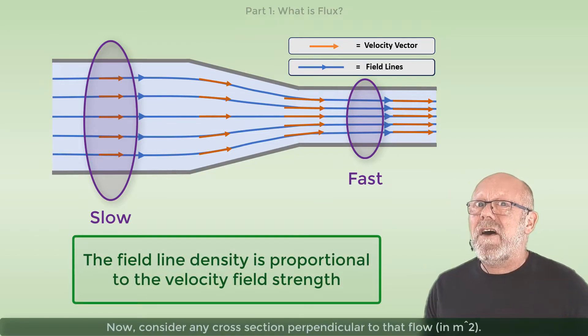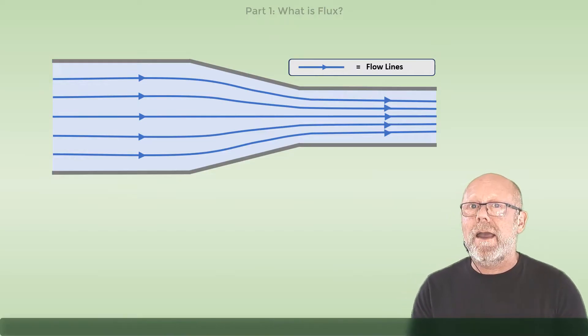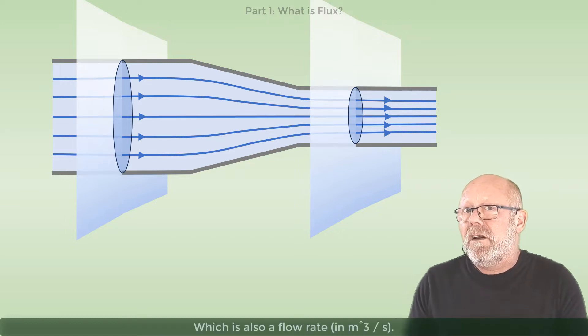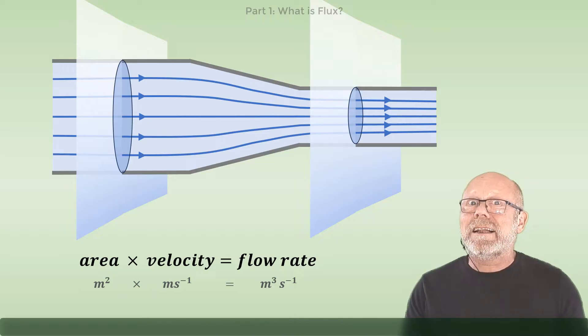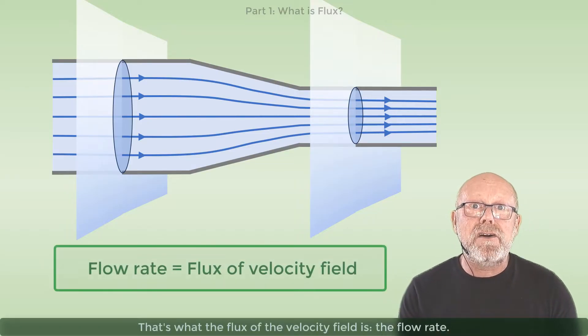In other words, the density of field lines represents the velocity of the water. If you want, you can also say that the field line density represents the strength of the velocity field. Now consider any cross-section perpendicular to that flow, expressed in meters squared. Multiply it by the velocity, and you get a volume per unit time, which is also a flow rate in meters cubed per second. That's what the flux of the velocity field is: the flow rate.